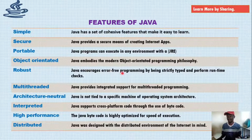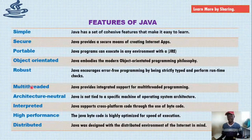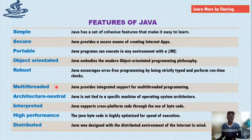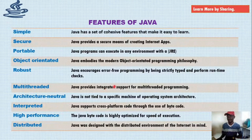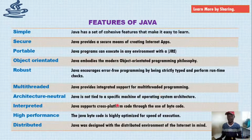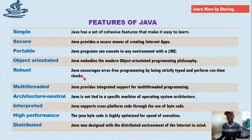Robust: Java encourages error-free programming by being strictly typed and performing runtime checks. Java is multi-threaded, meaning it allows you to develop applications that can perform different tasks at the same time — Java provides integrated support for multi-threaded programming. It's architecture neutral, meaning it is not tied to any specific machine or operating system architecture. You can have a Java program running on Mac OS, Linux, and Windows.